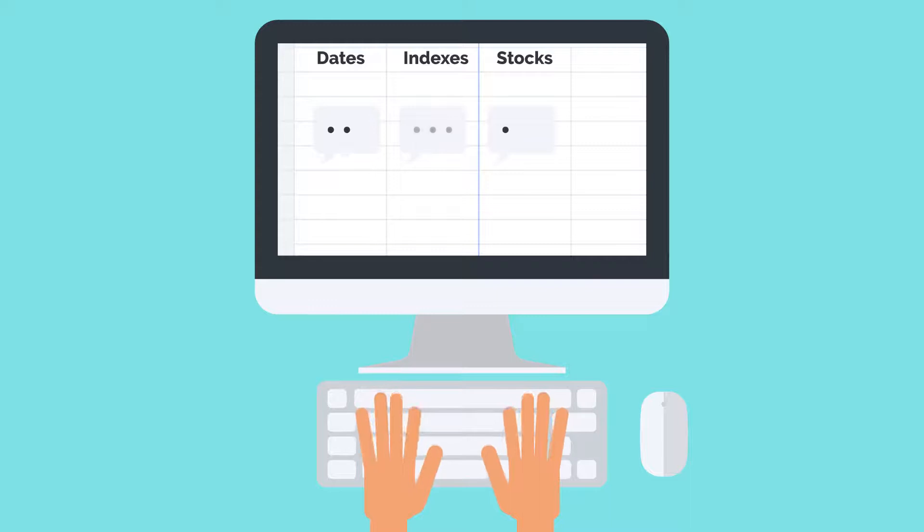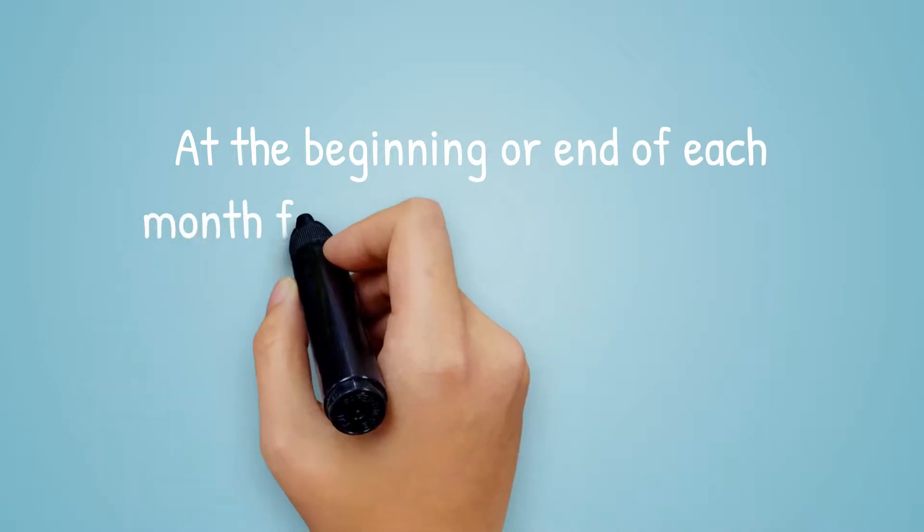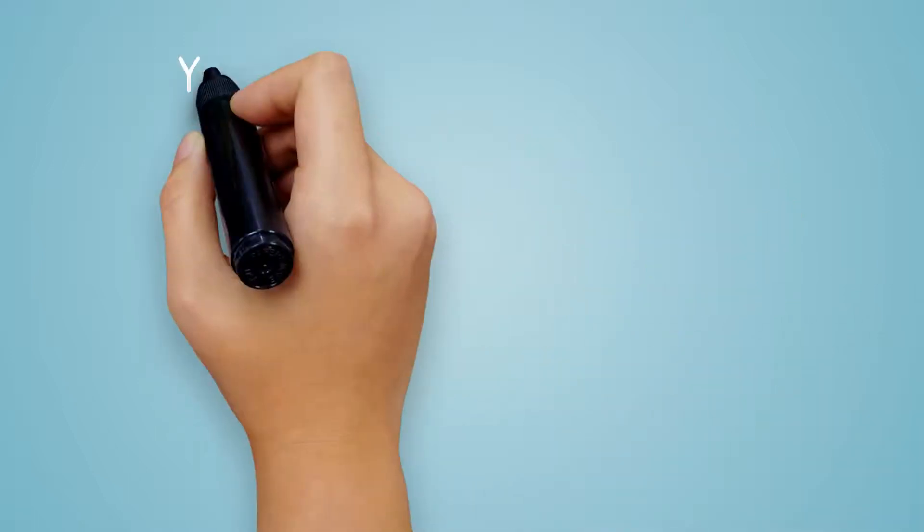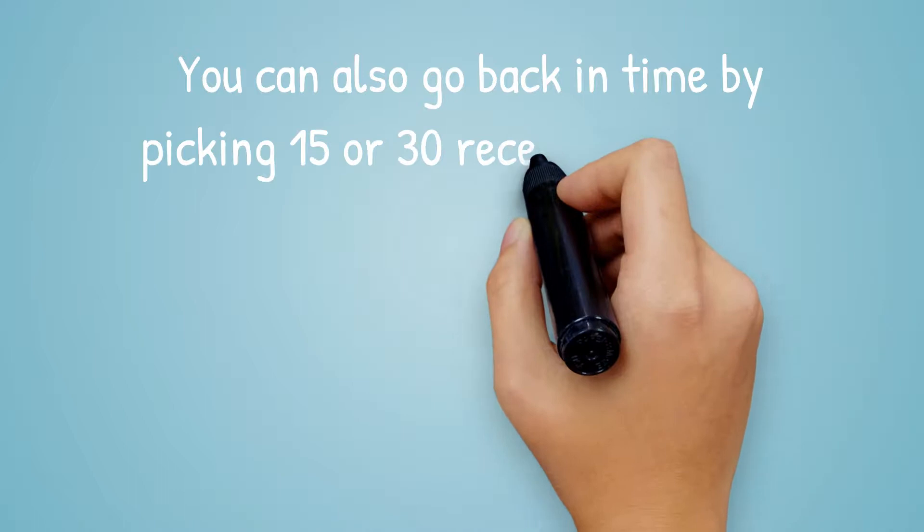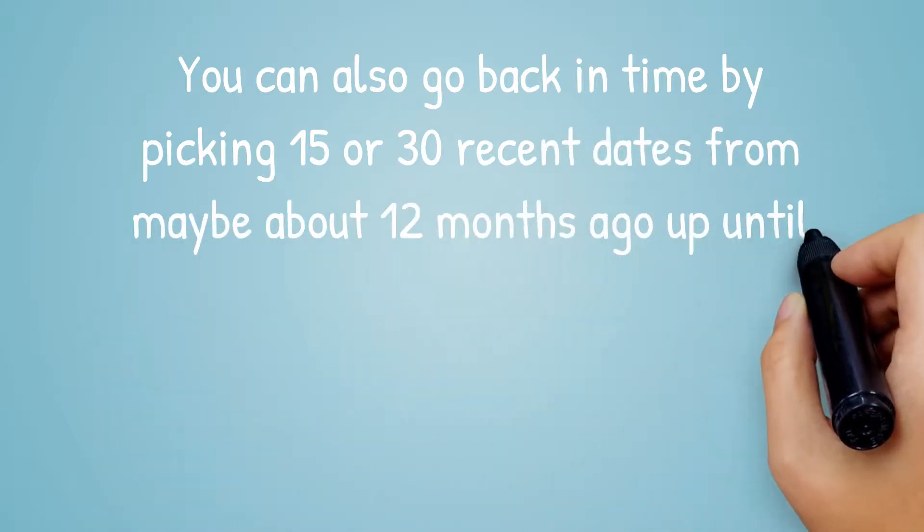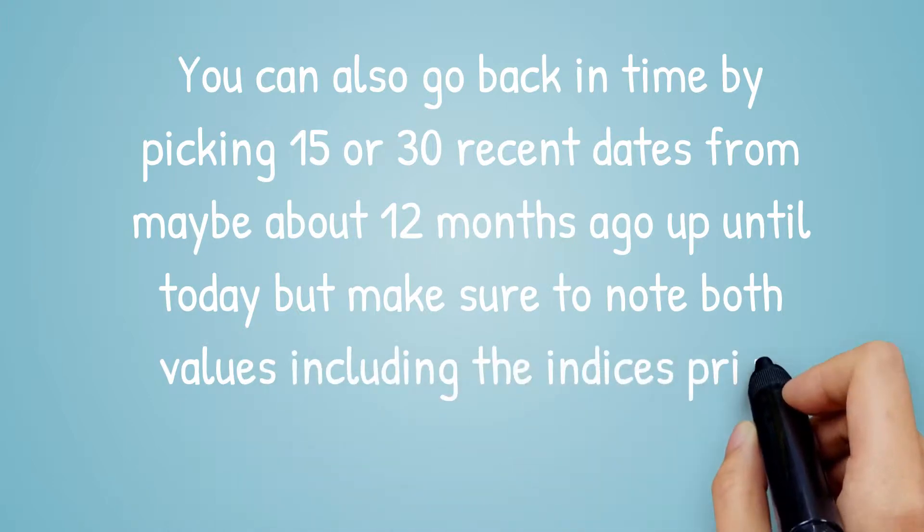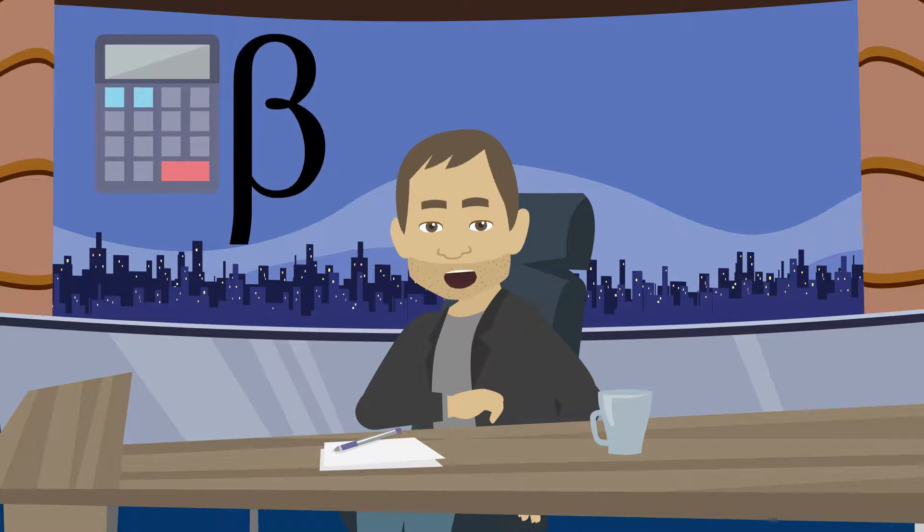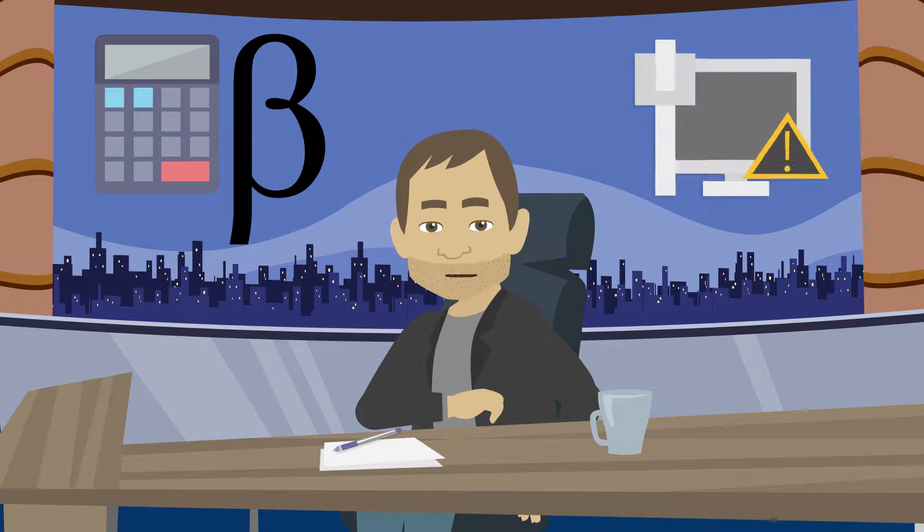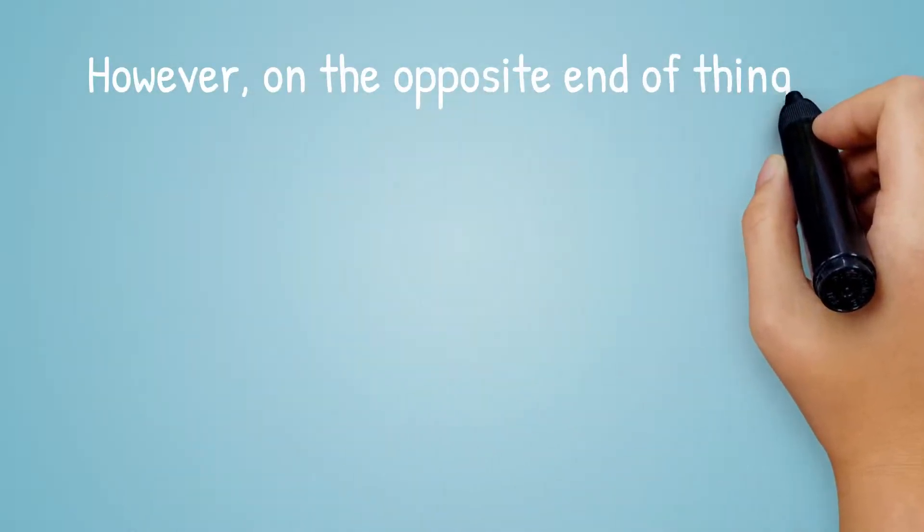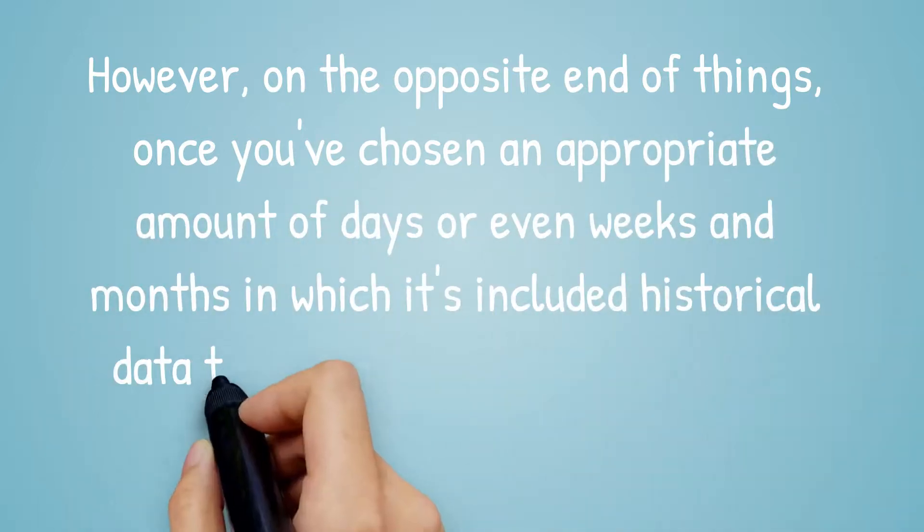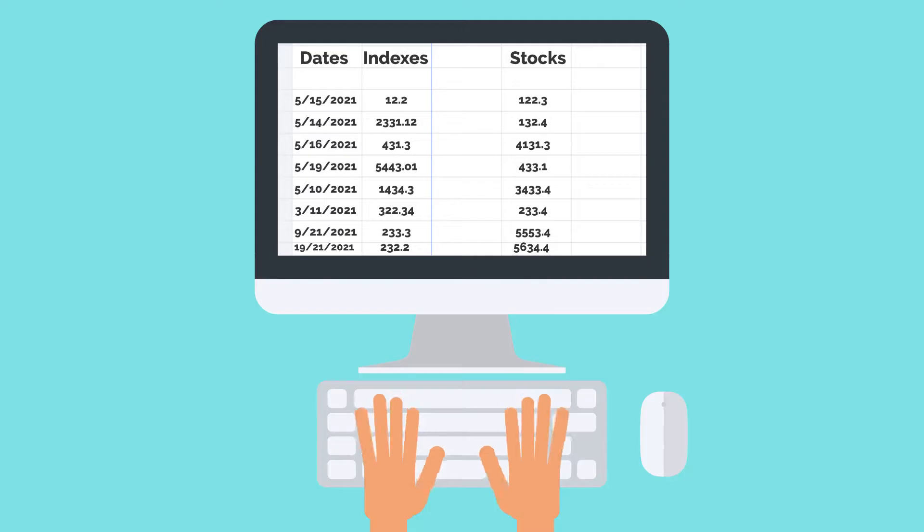After making the three columns, enter your data points into the spreadsheet. Try starting with one-month intervals and pick a date to start. At the beginning or end of each month, for example, then input what you find for that day's value on the index like the S&P 500 as well as other stock prices. You can also go back in time by picking 15 or 30 recent dates from maybe about 12 months ago up until today. But make sure to note both values including the index prices or level and stock price. You have to be careful when choosing a time frame for your beta calculations. If you choose too short of one, the accuracy won't improve much. However, on the opposite end of things, once you've chosen an appropriate amount of days or even weeks and months in which it's included historical data, then more accurate results will start coming out.